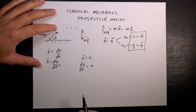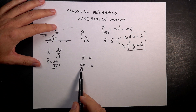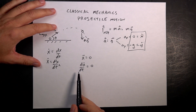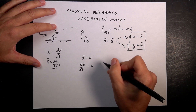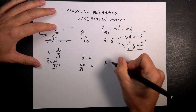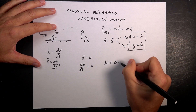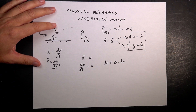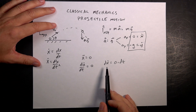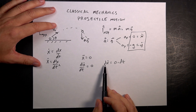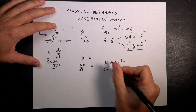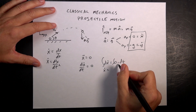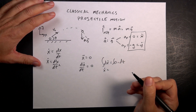This is a separable problem, such that I can treat each of these as its own separate variable. I can multiply both sides by dt, and I get dx dot equals zero dt. Now I can integrate both sides. If I integrate dx dot, I get x dot. And if I integrate the right side, the integral of zero is just a constant — let's call that c.